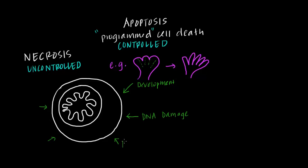In addition, infection — especially by viruses — can also induce programmed cell death. Because viruses like to reside inside our cells, oftentimes it's immune cells, our army against infection, that see specific proteins on virus-infected cells. Our immune cells can recognize these proteins and send signals to the infected cell telling it to undergo cell death.